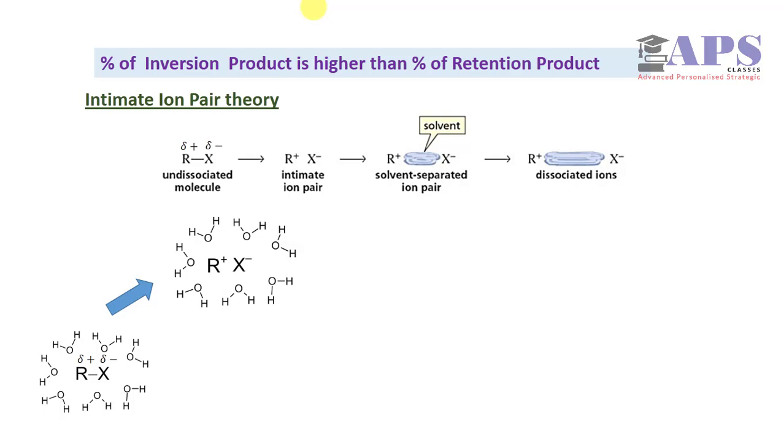This R+ and X- is jointly solvated by solvent molecules and these ions are so close to each other that solvent molecules cannot be present in between them. These two ions are called intimate ion pairs. With increasing time, charge density and effective attraction between R+ and X- will decrease and solvent molecules will separate these ions, forming solvent separated ion pairs.